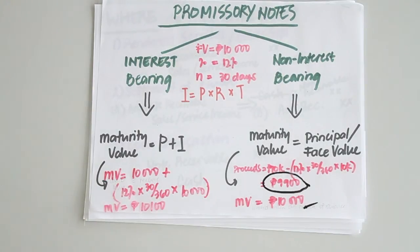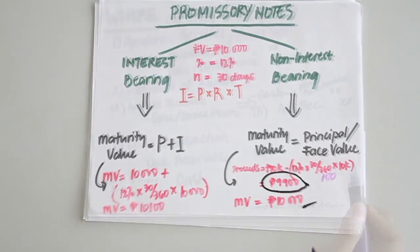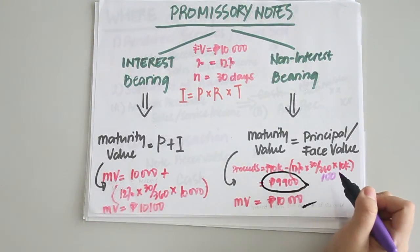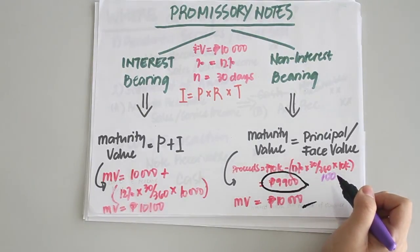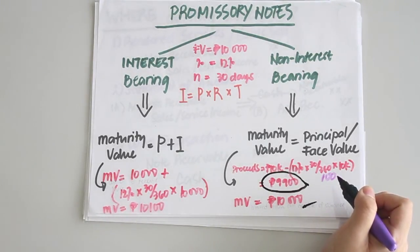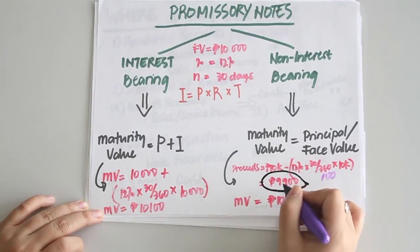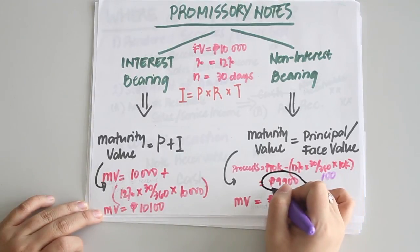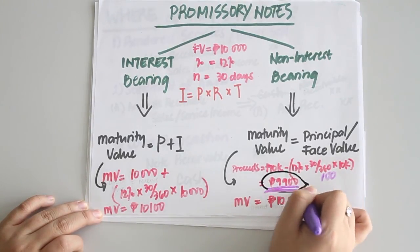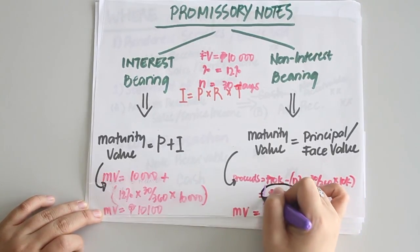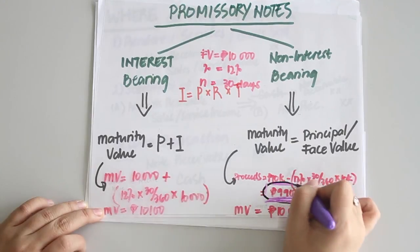For non-interest bearing notes, the 100-peso interest would already be deducted on the date of issuance to get the total proceeds. This means the maker would only receive 9,900 pesos on the date of issuance instead of the 10,000 pesos they would have received with an interest bearing note.